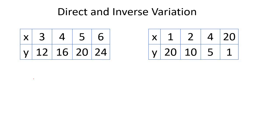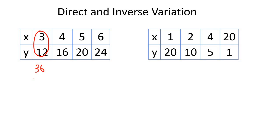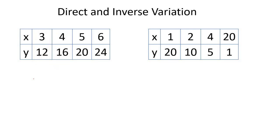I want you to just focus on this table on the left-hand side, and multiply these two numbers together. What do you get? 36. Then multiply these two numbers together. What do you get? 64. So because these two answers are not the same, multiplying doesn't work.